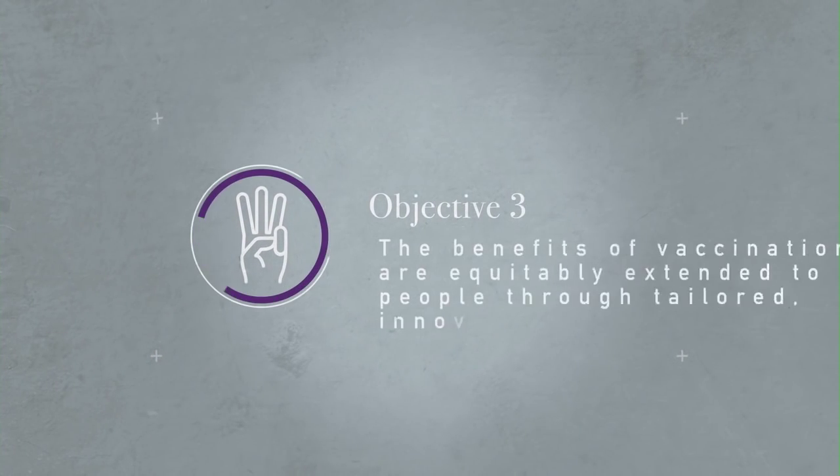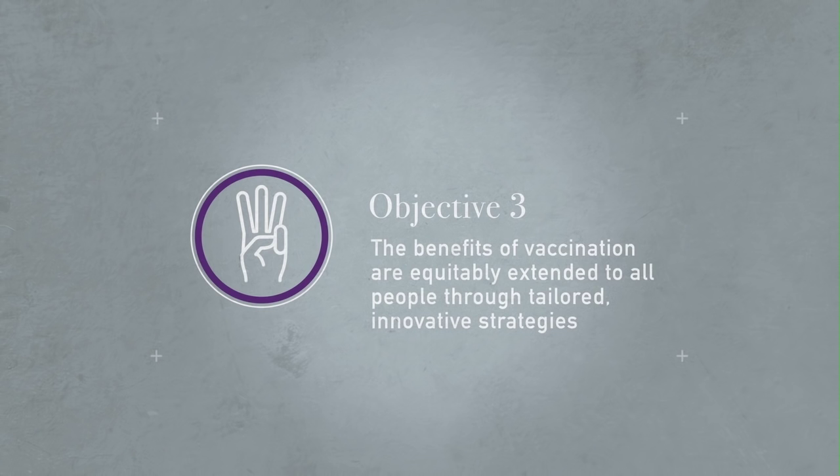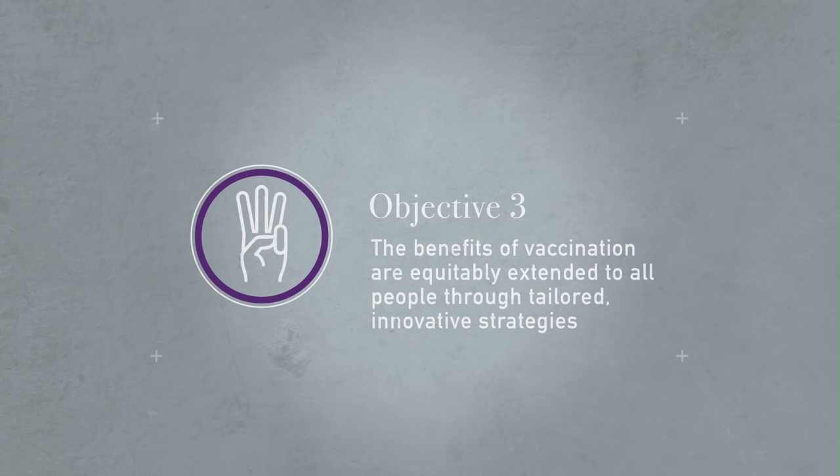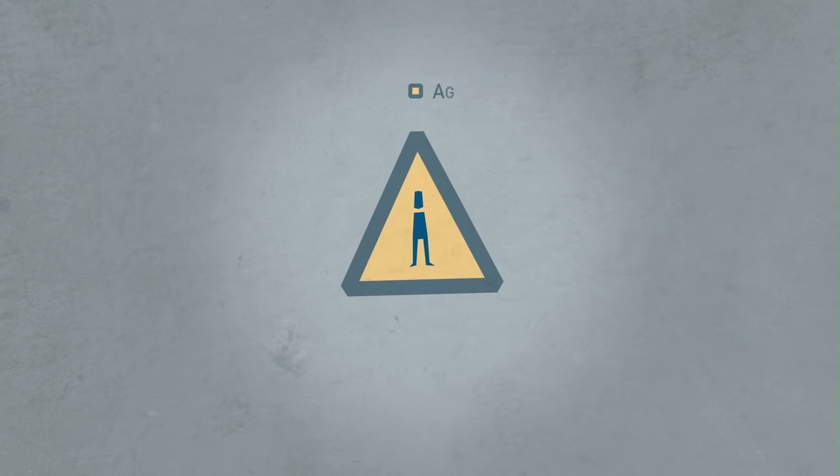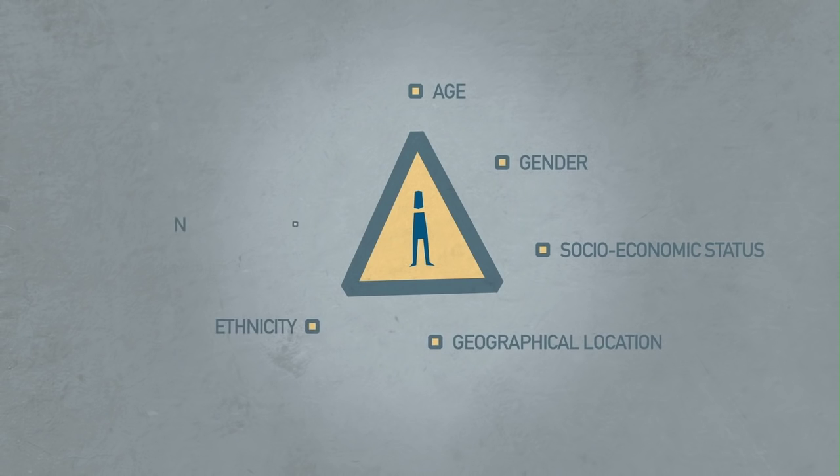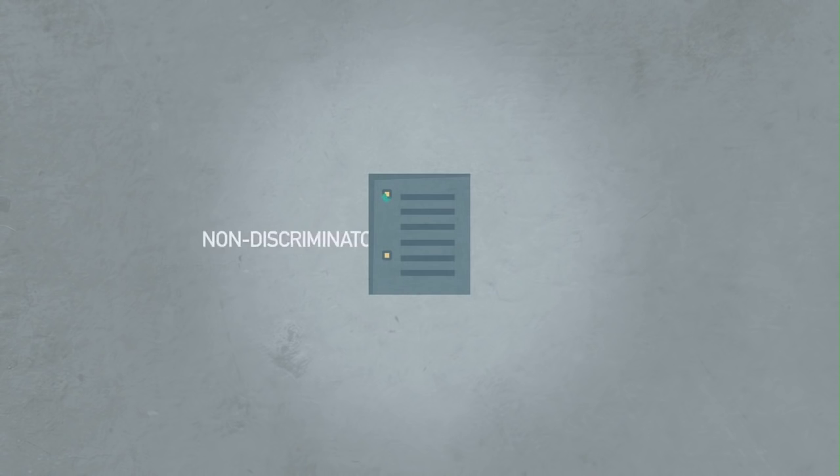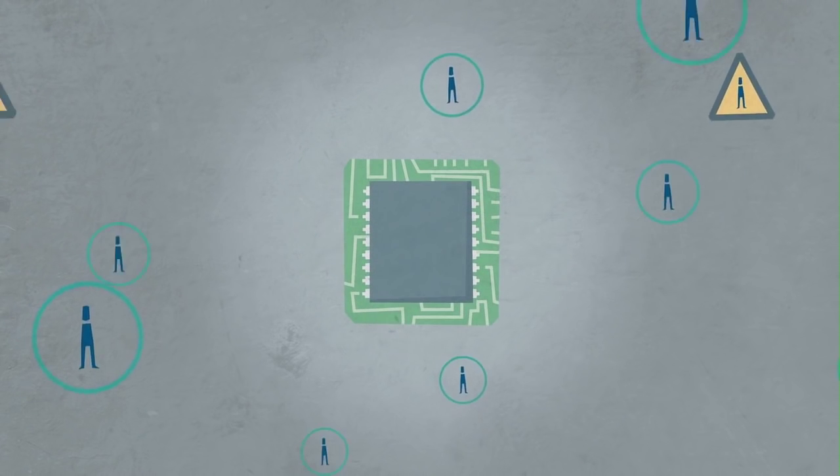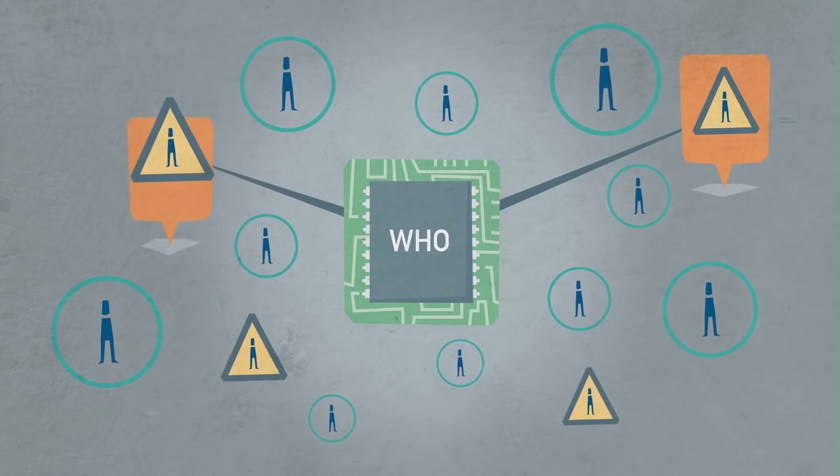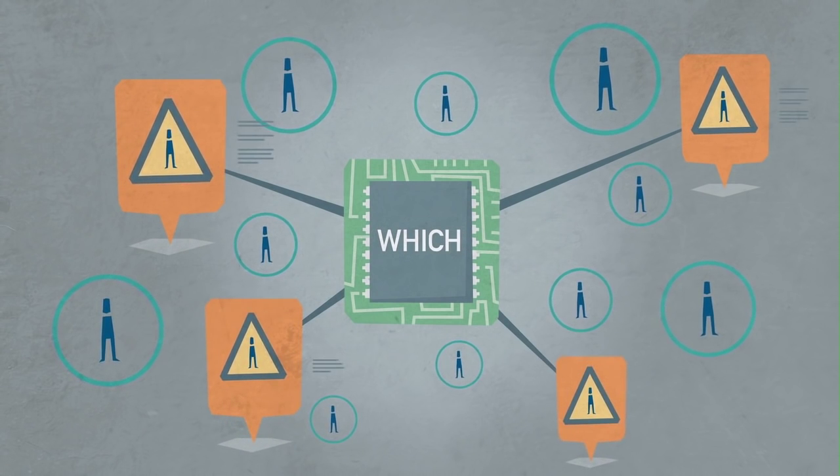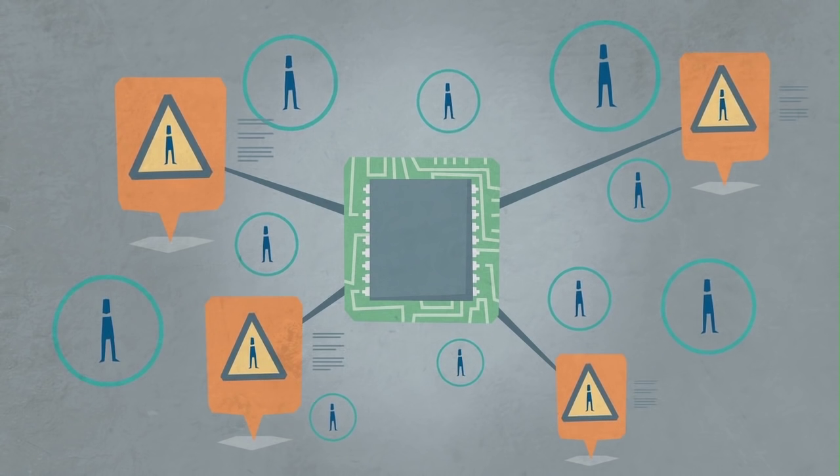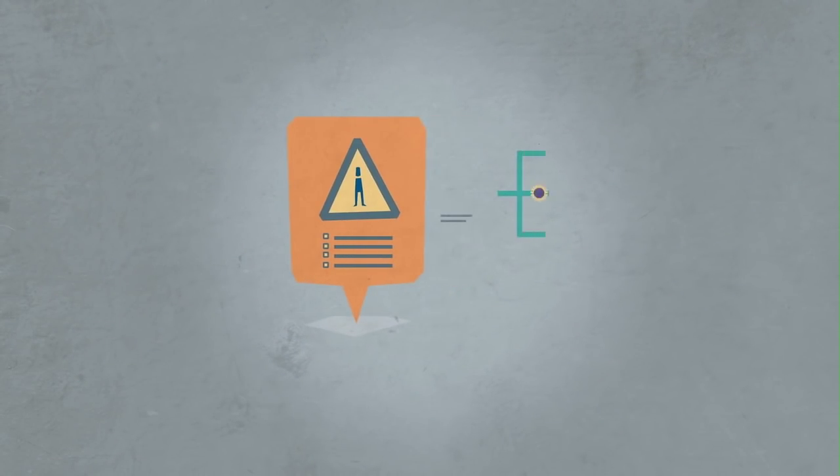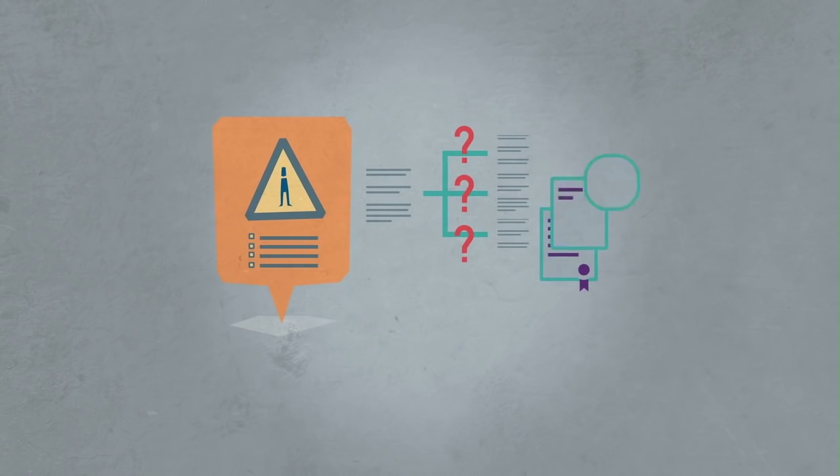Objective 3: The benefits of vaccination are equitably extended to all people through tailored, innovative strategies. Every individual should be protected irrespective of age, gender, socio-economic status, geographical location, ethnicity, nationality, or religious affiliation. We need to make sure that immunization policies are non-discriminatory and that immunization services are user-friendly. With electronic immunization registries, we will know who has not been vaccinated, where they are, and which communities they are a part of. This will be a giant step forward. But we need to take it further to understand why they are not vaccinated and to tailor our immunization programs and services accordingly.